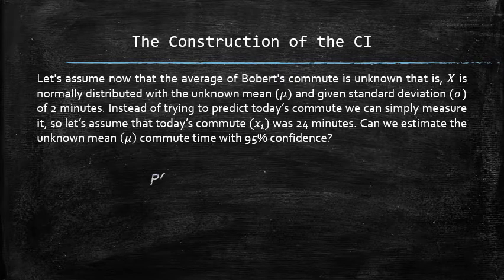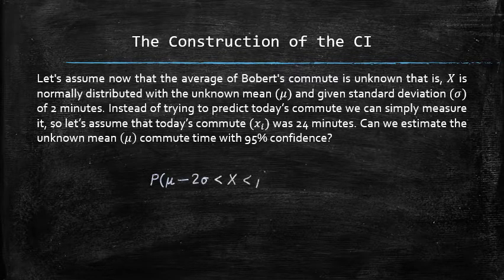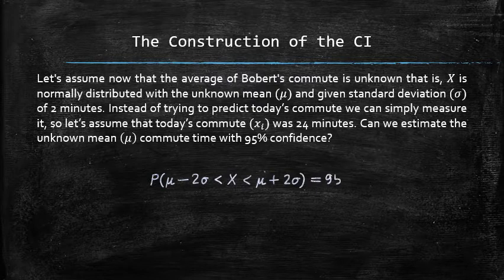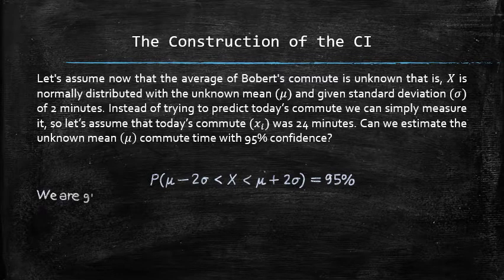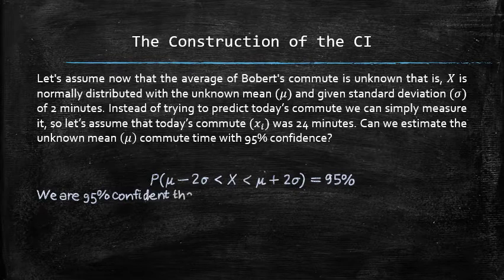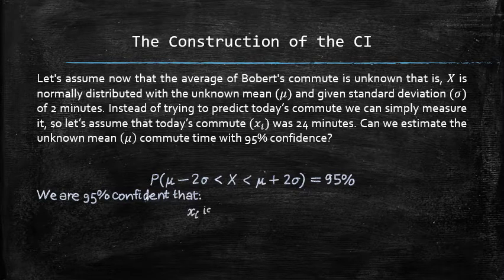By the empirical rule, the probability of X being within two standard deviations from μ is equal to 95%. Therefore, we are 95% confident that the random observation xi is within 2σ from μ.